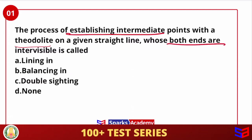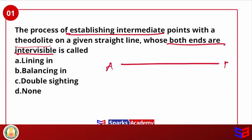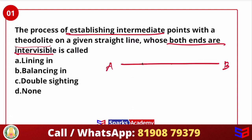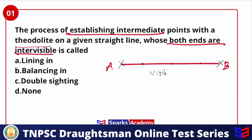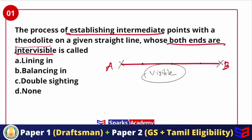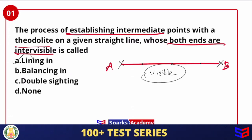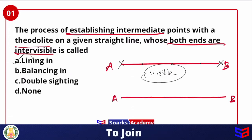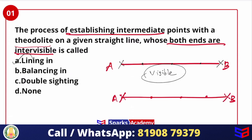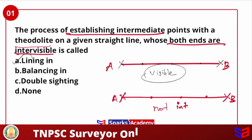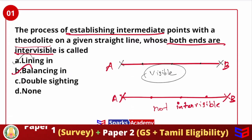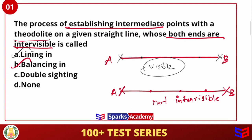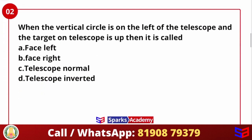The condition given is: when both ends are inter-visible. For example, suppose we have a survey line A and B, and both points A and B are visible to each other — the process used to fix intermediate points on that line is called Lining. If A and B are not inter-visible, then the process used is called Balancing. So the answer to the first question is Lining.